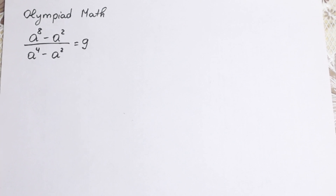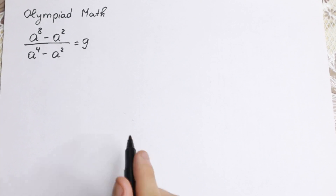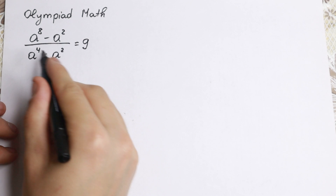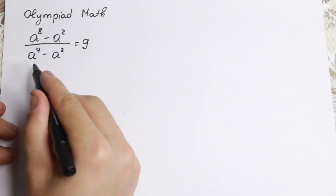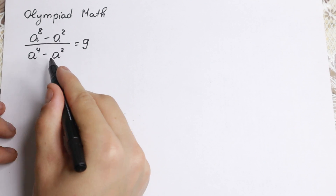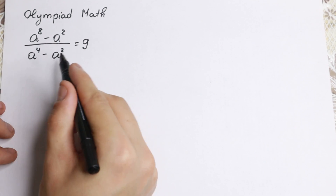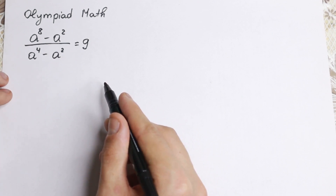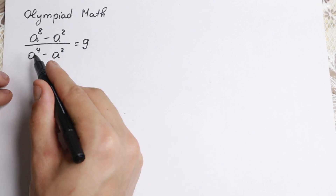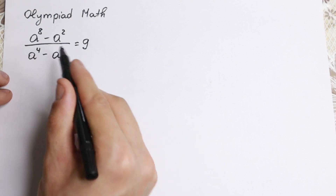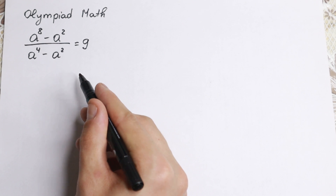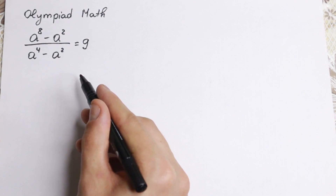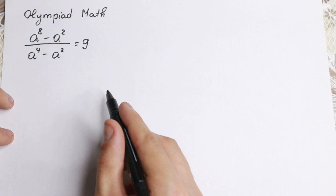Hello everyone! Happy to see you here. We have a really interesting problem today: a to the eighth minus a squared in the numerator, and a to the fourth minus a squared in the denominator, equal to 9. There are a lot of methods to solve it — we have eighth power, fourth power, huge powers. It's not an easy equation, but I want to show you a really good trick to simplify it.